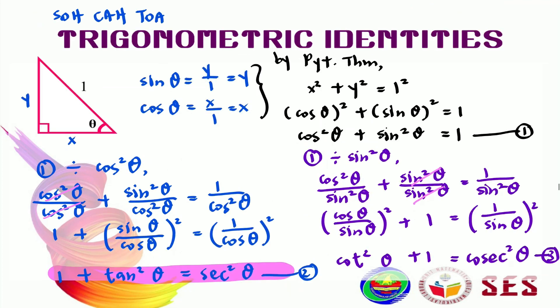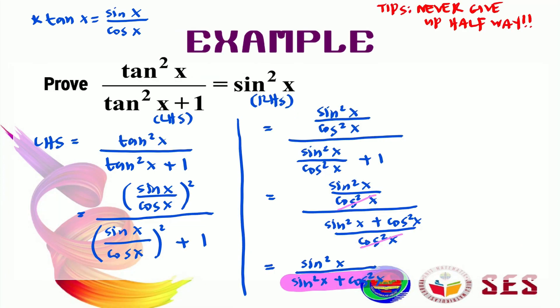And which identity is that? Is it number 1 or number 2 or number 3? So, this is equal to identity number 1. And identity number 1 says that sine squared x plus cos squared x is equal to 1. So, I can change that to become sine squared x over 1. And this is just sine squared x. And look, this is our right-hand side.